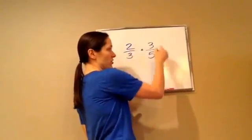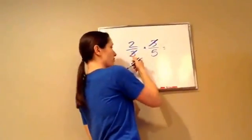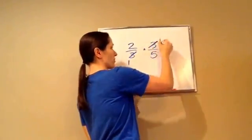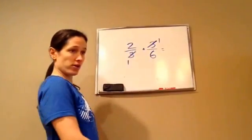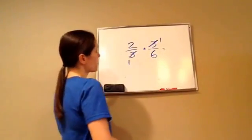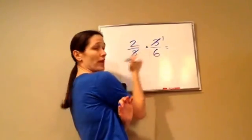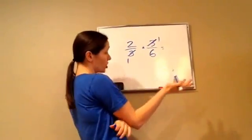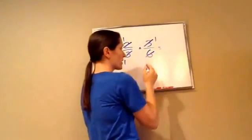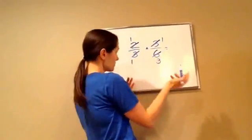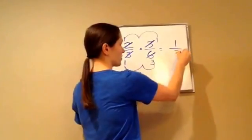So what can I cancel? A 3 and a 3. So a 3 and a 3 — 3 will go into 3 one time, and 3 will go into 3 one time. Let's pretend I'm going to make this a 6. You have to come up with a number that goes into both 2 and 6. So 2 will go into both of them — 2 will go into 2 one time and 2 will go into 6 three times. Then you just go 1 times 1 is 1 and 1 times 3 is 3.